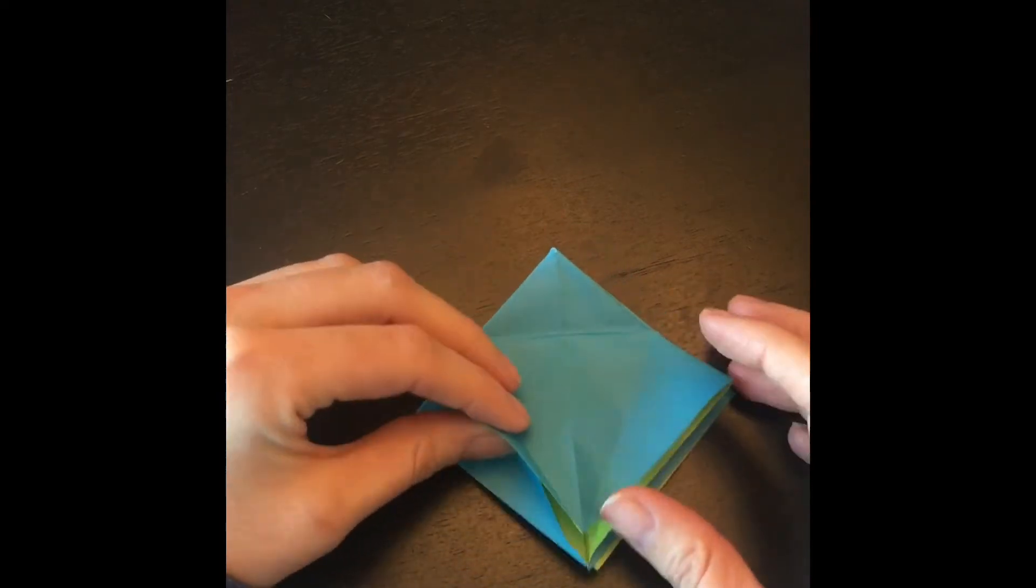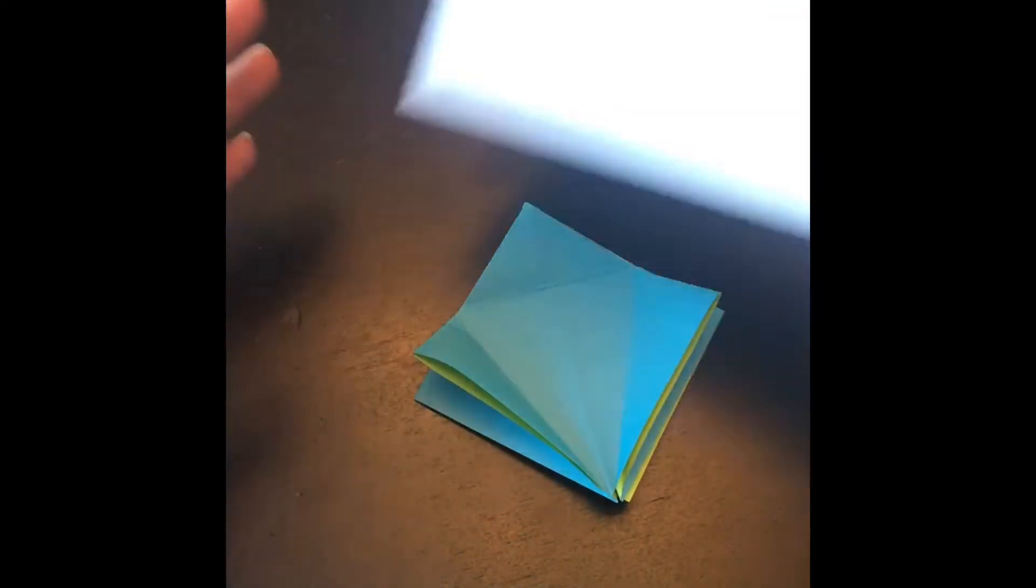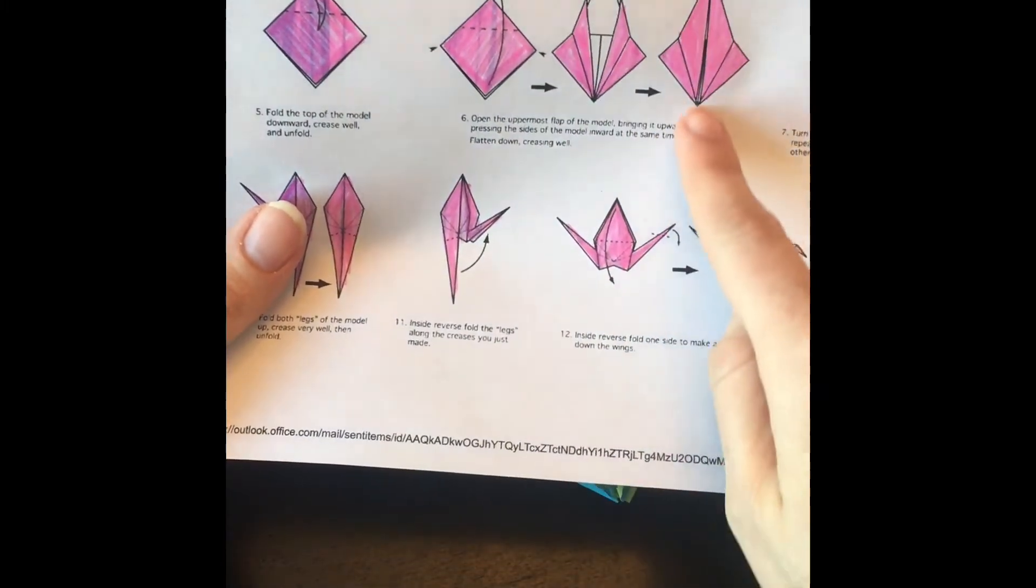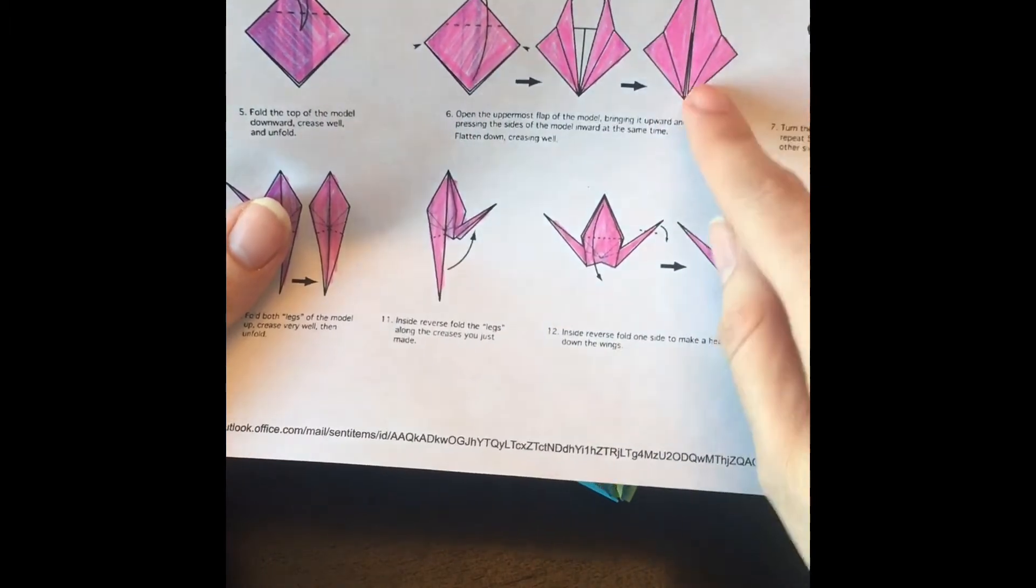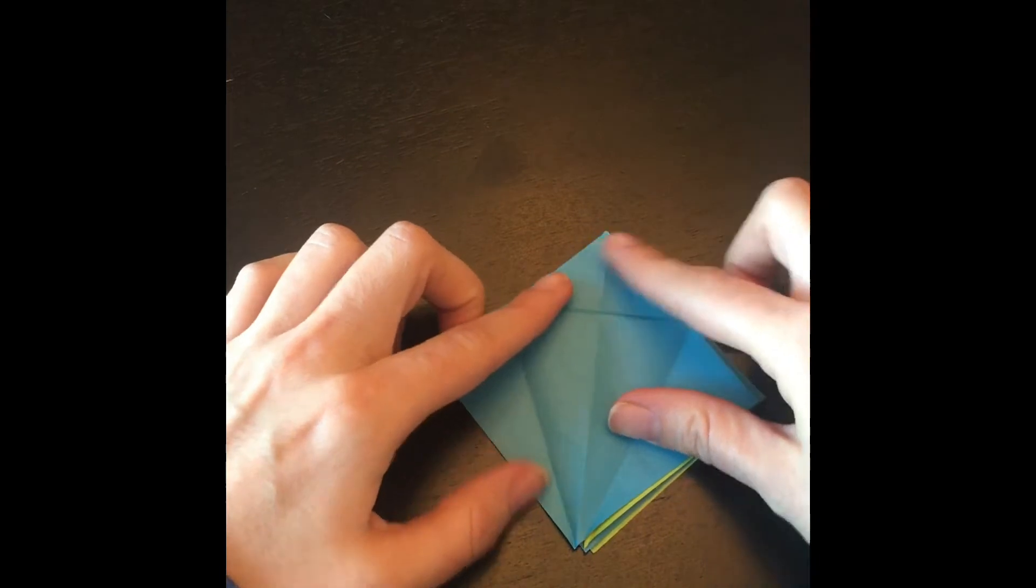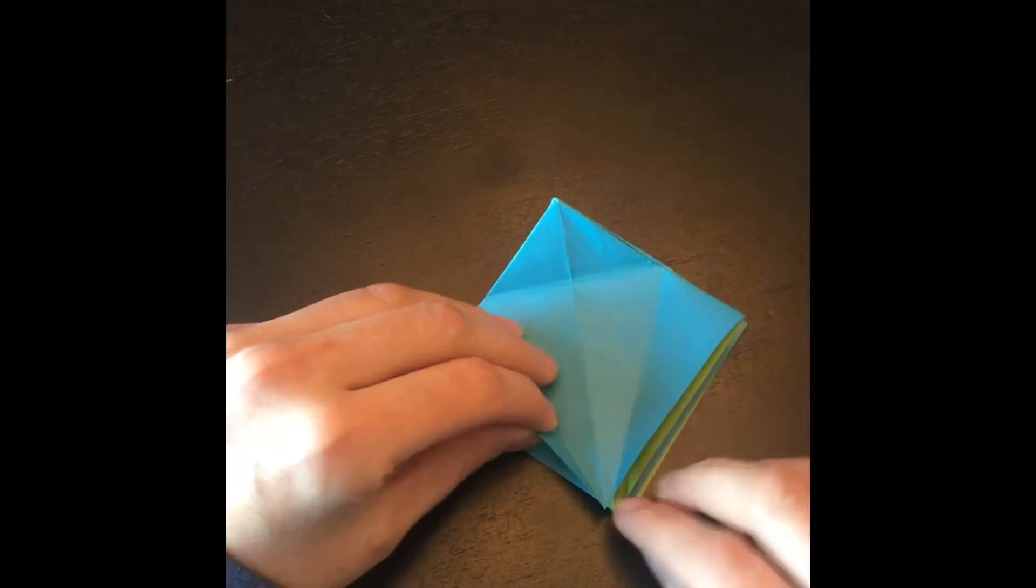And then we're going to take these, put this up here, we're going to open them up, and it's going to open up to a longer diamond. That's why we had the top here folded, so it's easier to crease it. So now we're going to open it here.